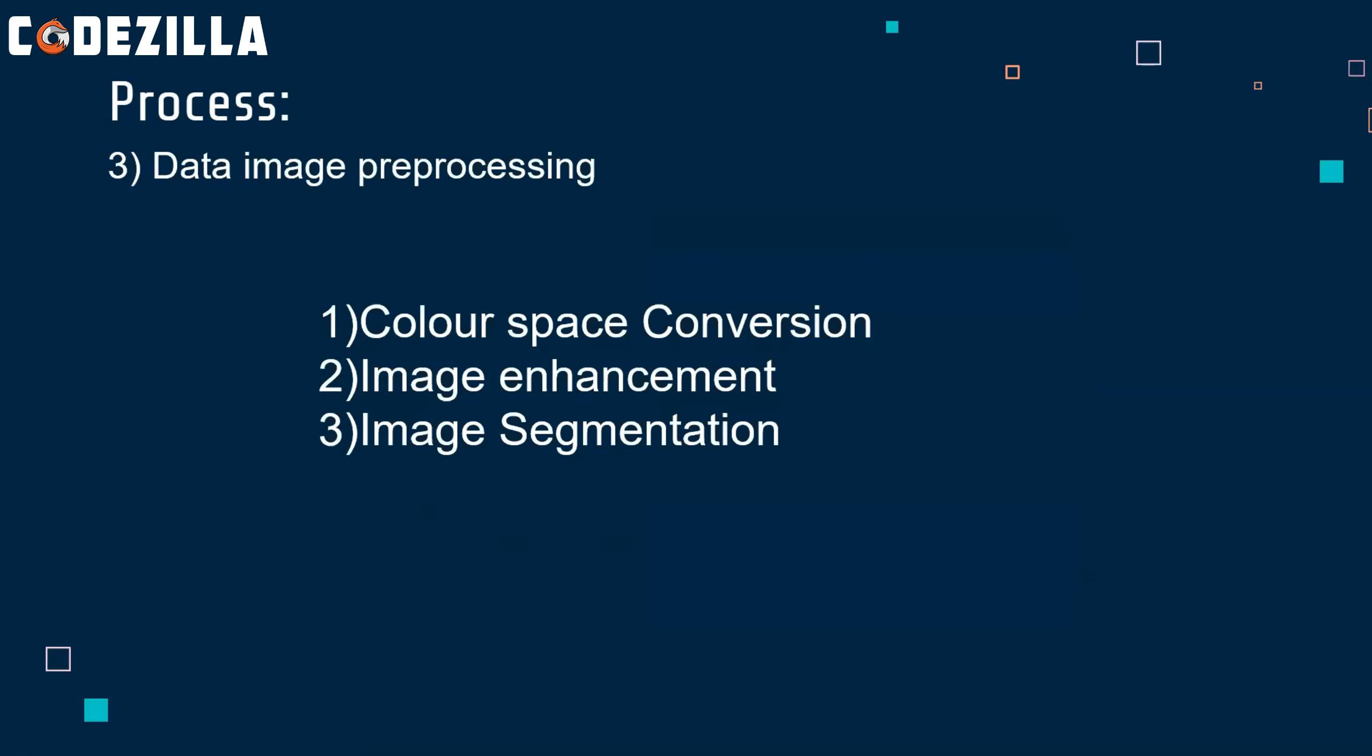So, the next step is image preprocessing. In image preprocessing, we suppress undesired distortions of these images and enhance some image features important for further processing. Features here is the sense of structure of the leaf, color of the leaf, etc., which are essential for further classification. In data image processing includes color space conversion, image enhancement, and image segmentation.